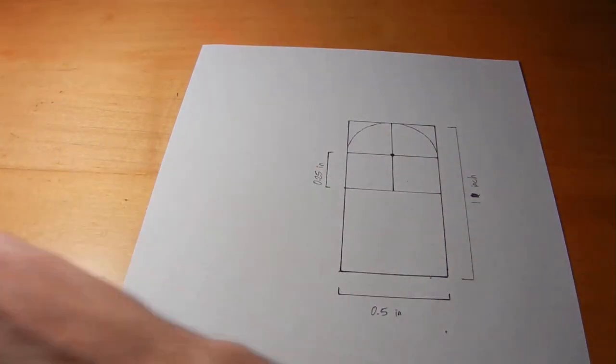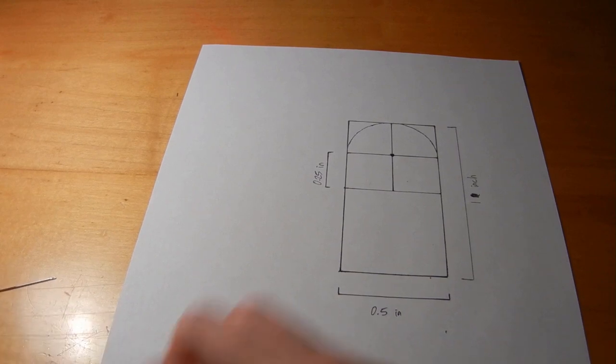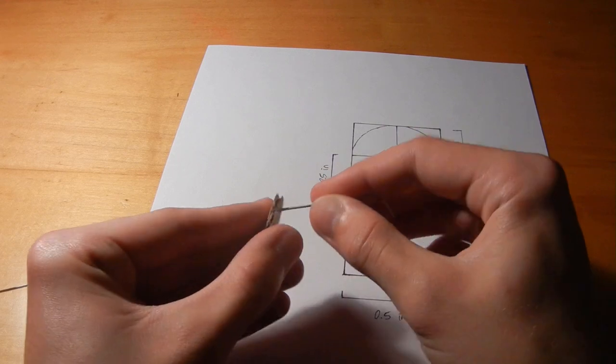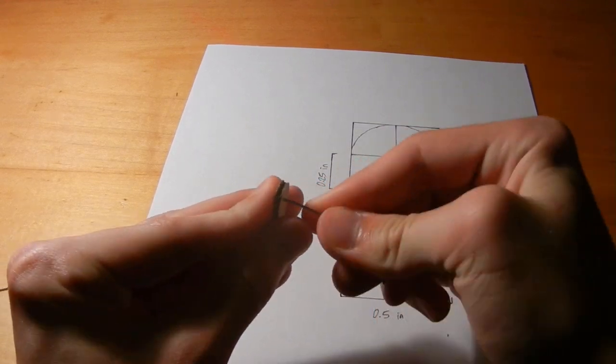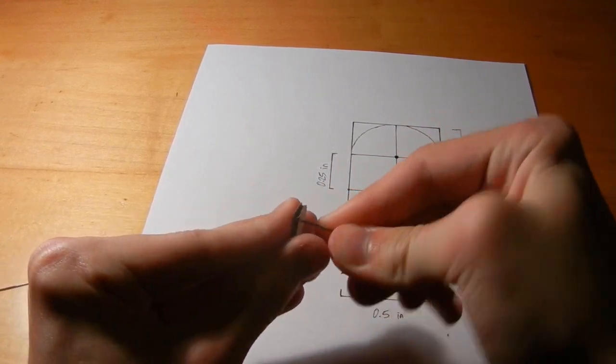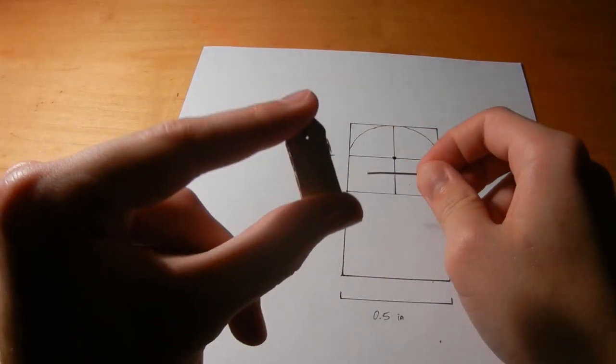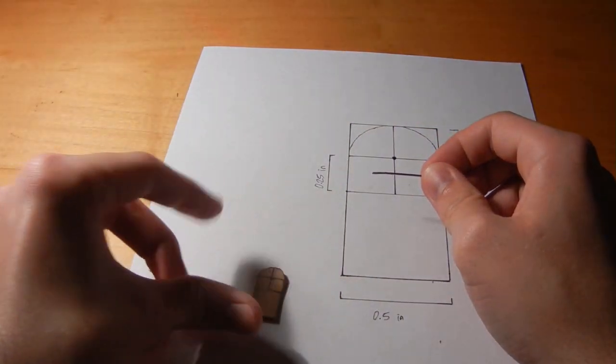And once the hole is fairly big you can try putting a piece of paper clip in it. And if it doesn't quite get out the other side just sort of twist it and push lightly until it goes through. So now this piece is ready you just need three more of these.